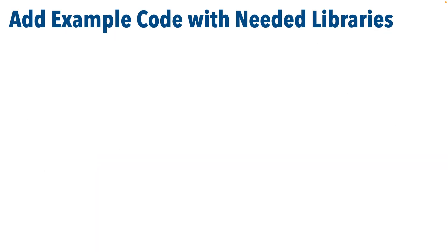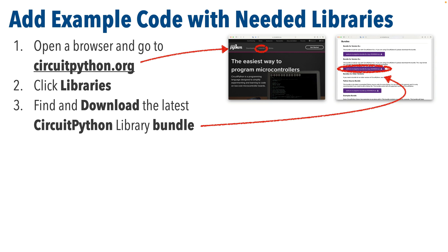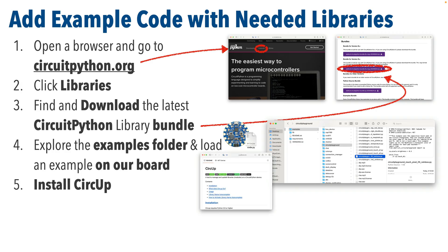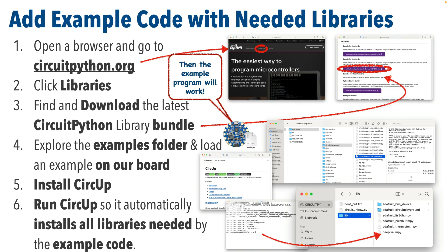We're going to find and download the latest library bundle, find example code, explore the examples folder, and load some example code on our board. We'll note that the code does not run because we don't have any libraries installed on our board yet. So we'll install Circup — which requires a few steps but is definitely worth it — and then we'll use Circup to automatically install all the libraries we need to our board's lib folder.